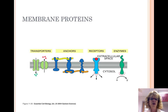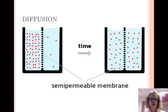Small molecules, like O2, can pass freely through the membrane. Larger molecules are assisted through by proteins. Diffusion is the spontaneous movement of particles from an area of high concentration to an area of low concentration. The particles move down the concentration gradient. This requires no energy.